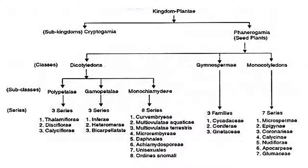This is the complete classification: Plantae is subdivided into cryptogamae and phanerogamae. Phanerogamae means seed plants, further classified as dicots, gymnosperms, and monocots. Dicots are sub-classified as polypetalae, gamopetalae, and monochlamydeae. In polypetalae there are three series, gamopetalae three, and monochlamydeae eight series. Gymnosperms have three families. In monocotyledoneae there are seven series.